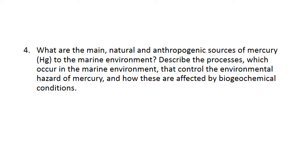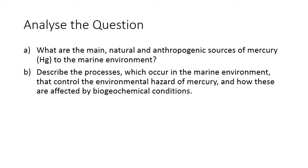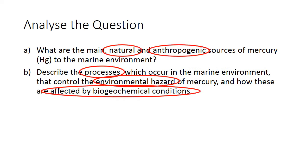The fourth question, which not many people answered, is about mercury and its toxicity — relating to the last lecture. We can split the question into two parts: the first part asks for the main natural and anthropogenic sources of mercury, so we're looking for a list of natural sources and a list of anthropogenic sources. The second part asks about the environmental hazard mercury poses — what are the controls on that hazard, what processes are involved, and how are those affected by the environment?